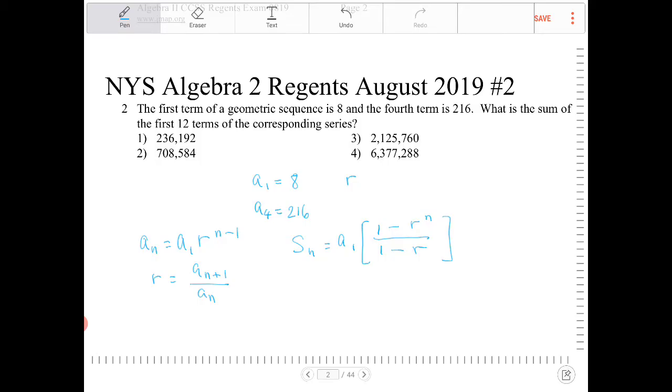So we will need to use definitely the second equation here because we will need to find the sum, but we will also need to find out what the common ratio is first. So to do that, because we're given A1 is 8 and A4 is 216, we're going to use the explicit geometric sequence equation to find out what R is. So how are we going to do that?